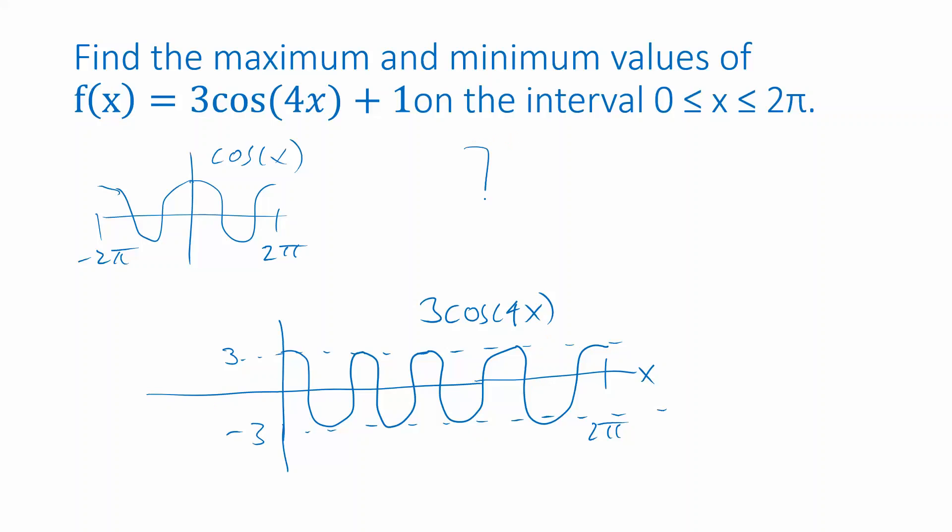I'll have 1, 2, 3, 4 oscillations. But I've shifted everything up, one unit. So the top is now at height 4. And the bottom is now at height negative 2. Here's our x-axis, our y-axis. This is the graph of y equals 3 cosine of 4x plus 1.